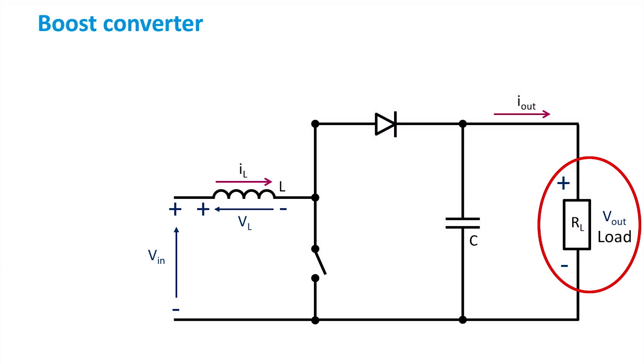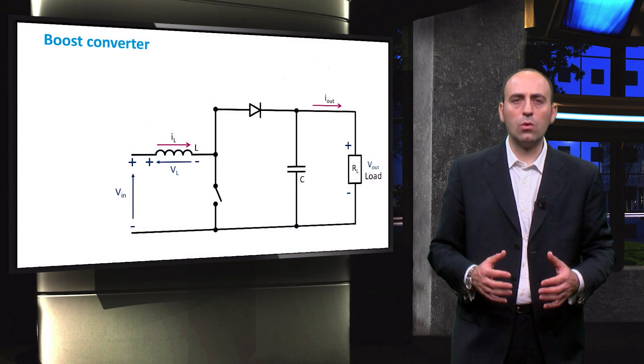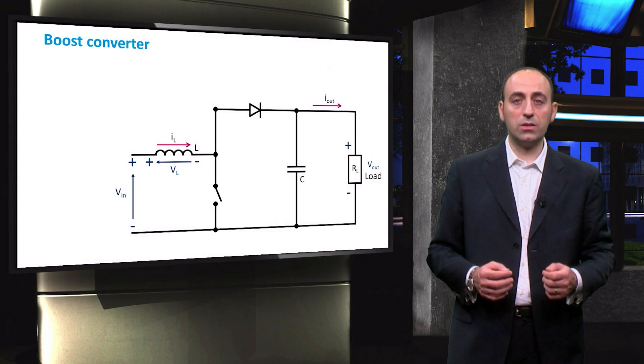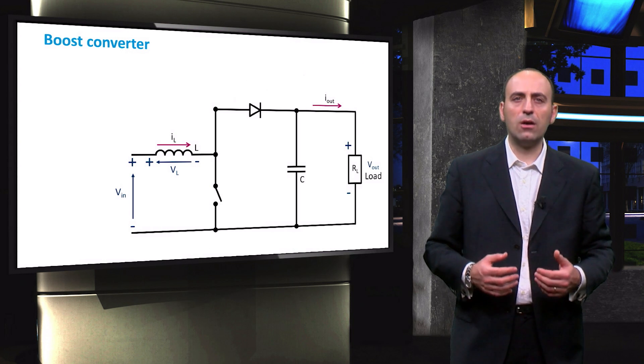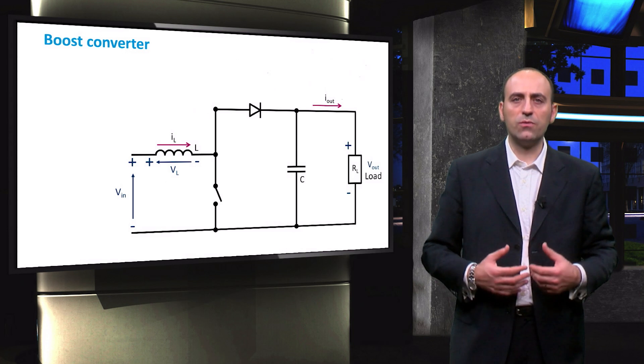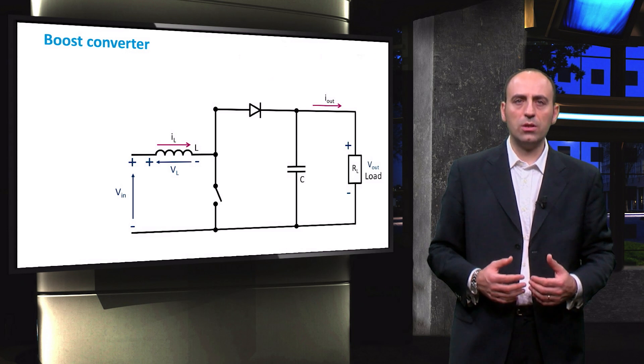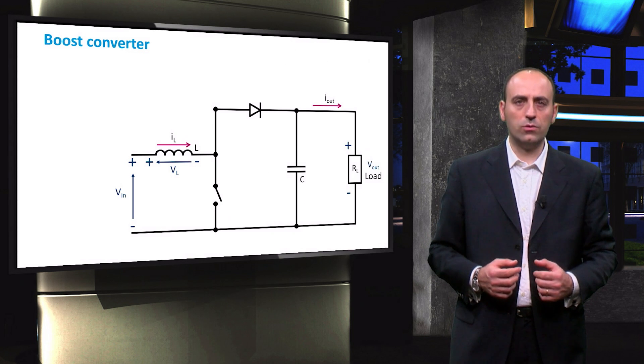Basically, the elements used are the same as the buck converter, but the topology is a little bit different. The working principle is that the energy stored in the inductor while the switch is on is later released against the higher output voltage Vout. In this way, the energy is transferred from a lower voltage, the one coming from the PV panels, to a higher voltage that is required by the load.